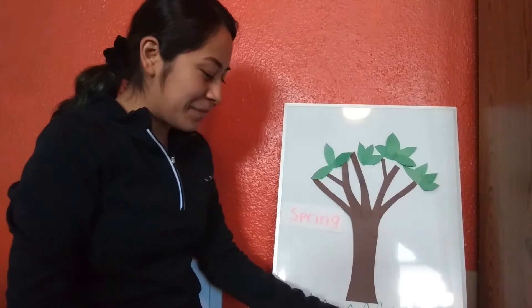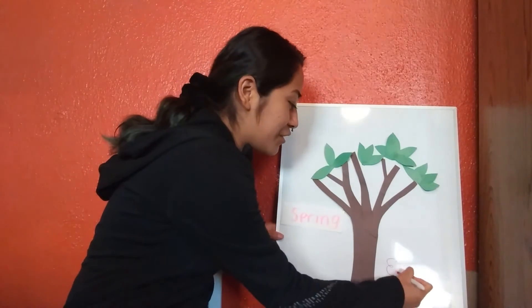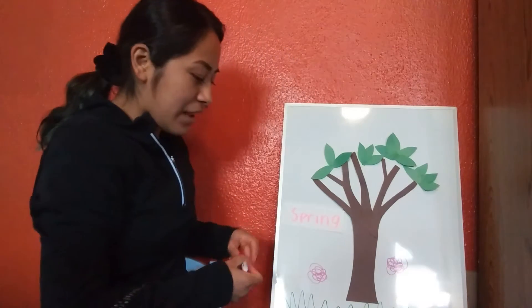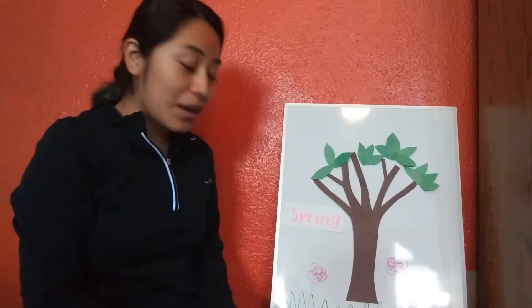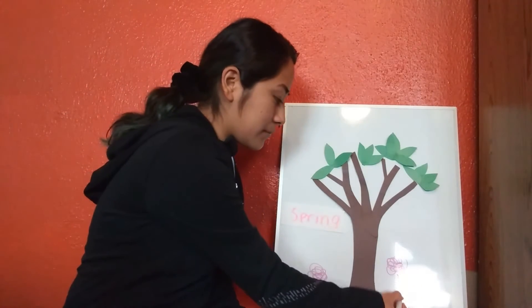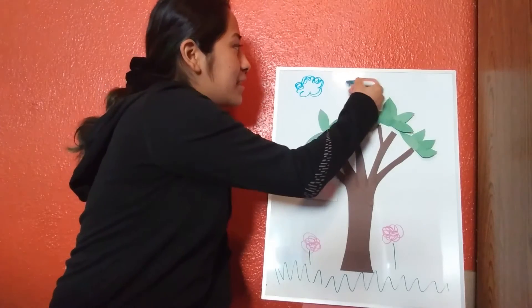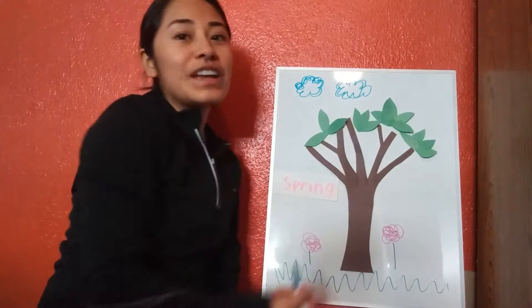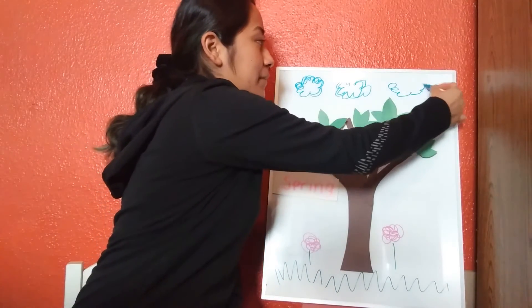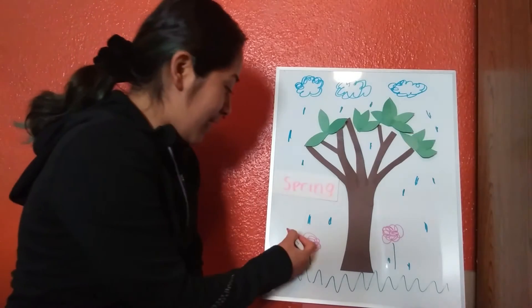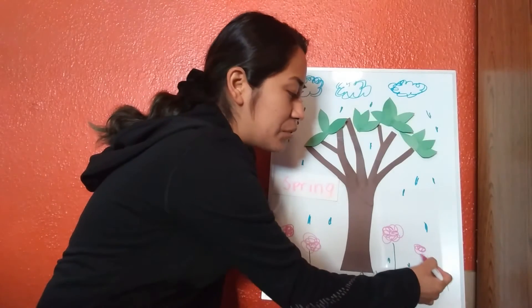During the spring time flowers start to grow. Lots of flowers start to bloom, and the reason for that is because the weather also changes. Flowers and leaves start to grow because it starts to rain a lot in the spring time. And all of this rain helps flowers grow and it helps the trees grow some leaves.